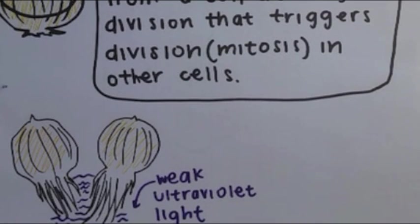By doing this experiment, Gershowitz was able to prove that this mitogenic radiation came from the weak ultraviolet radiation of the onion root itself.